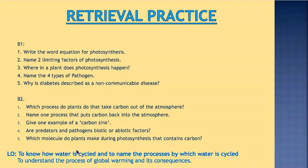These are questions from B2; the five you've just done were from B1. Number one, which process do plants do that takes carbon out of the atmosphere? That is photosynthesis. Number two, a process that puts carbon back into the atmosphere is either respiration or combustion. Number three, examples of a carbon sink: the ocean and also peat bogs. Number four, predators and pathogens are living things, therefore they are biotic factors. Number five, which molecule do plants make during photosynthesis that contains carbon? They make glucose, which they then go on to use for respiration. Make sure that you have self-assessed those questions before you move on.